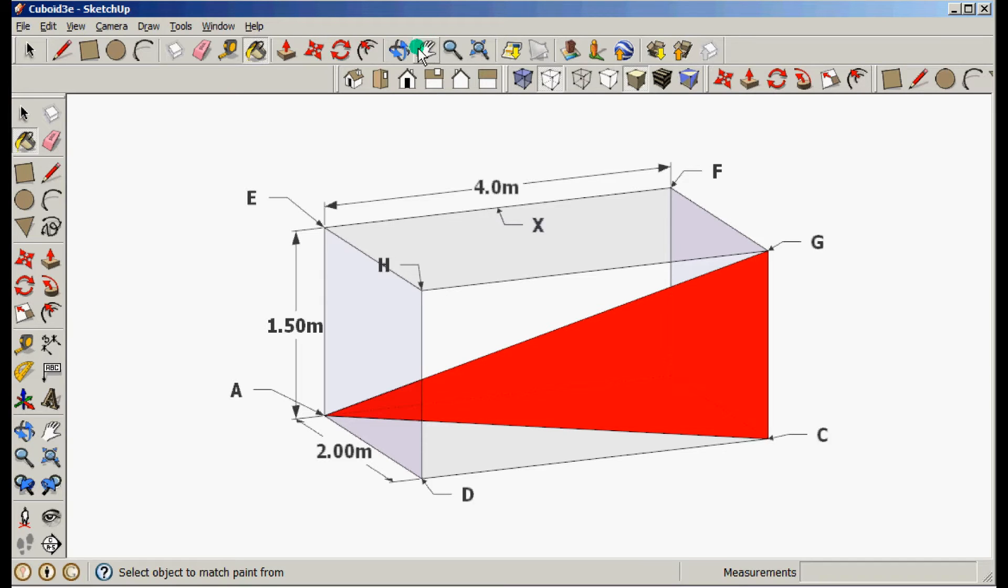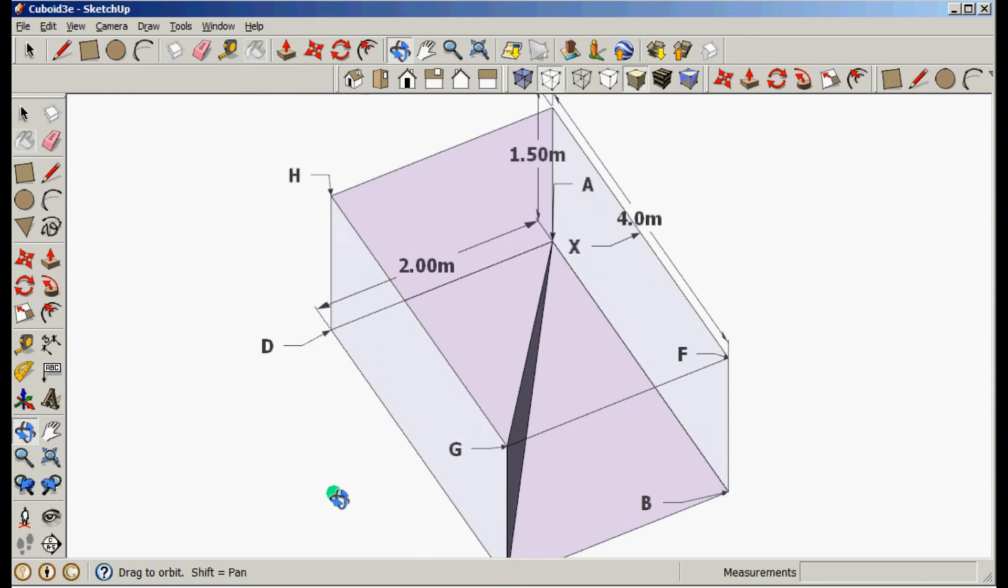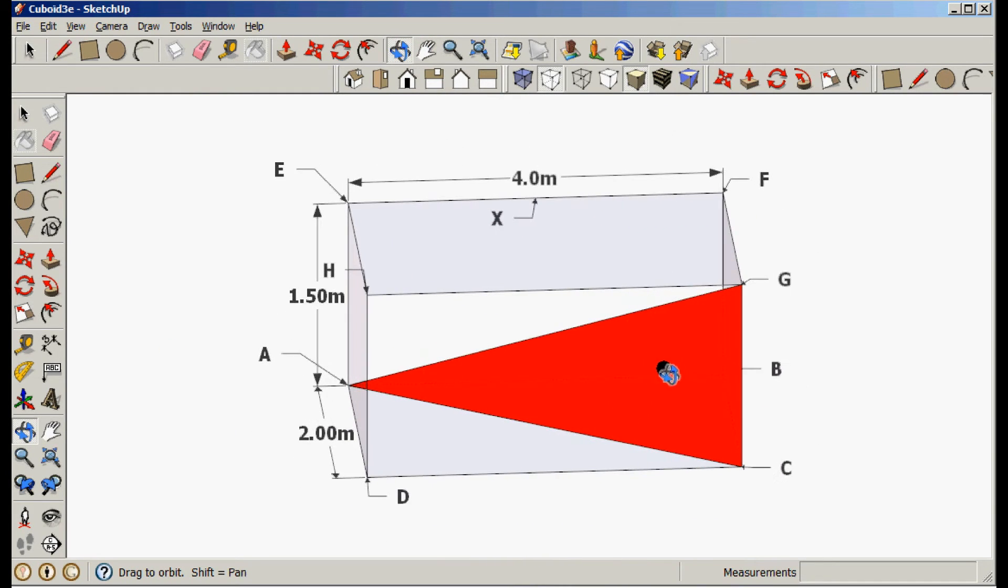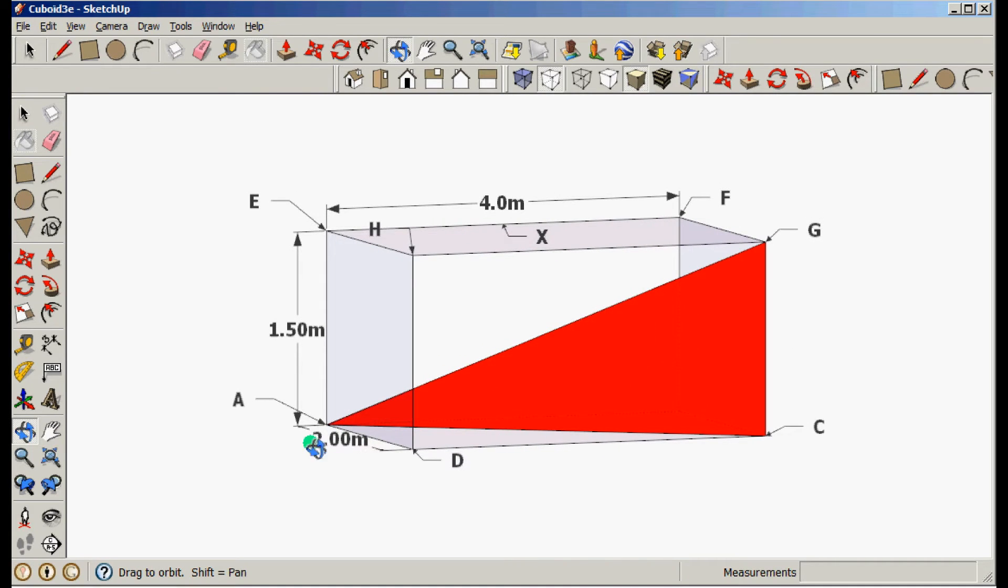And you can see, rotating it round, there's the triangle that's formed by putting a line from A to G. And we know this length because we calculated it in the last part of the question, and we know this length because it's the height of our triangle.